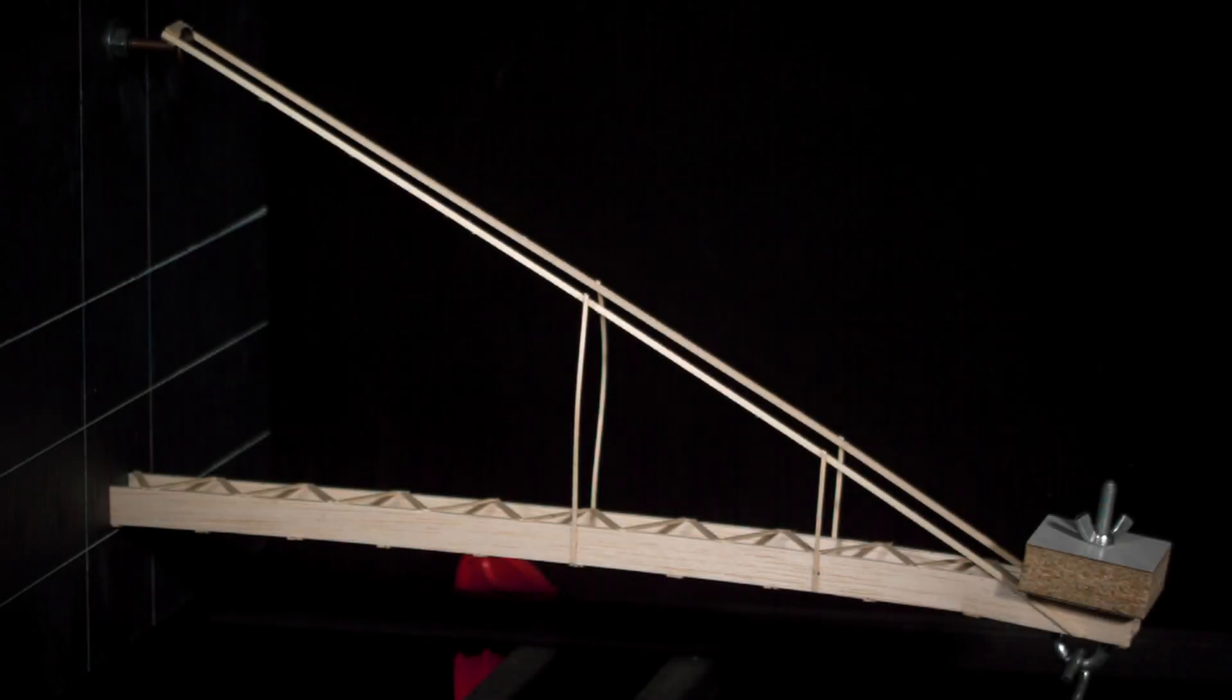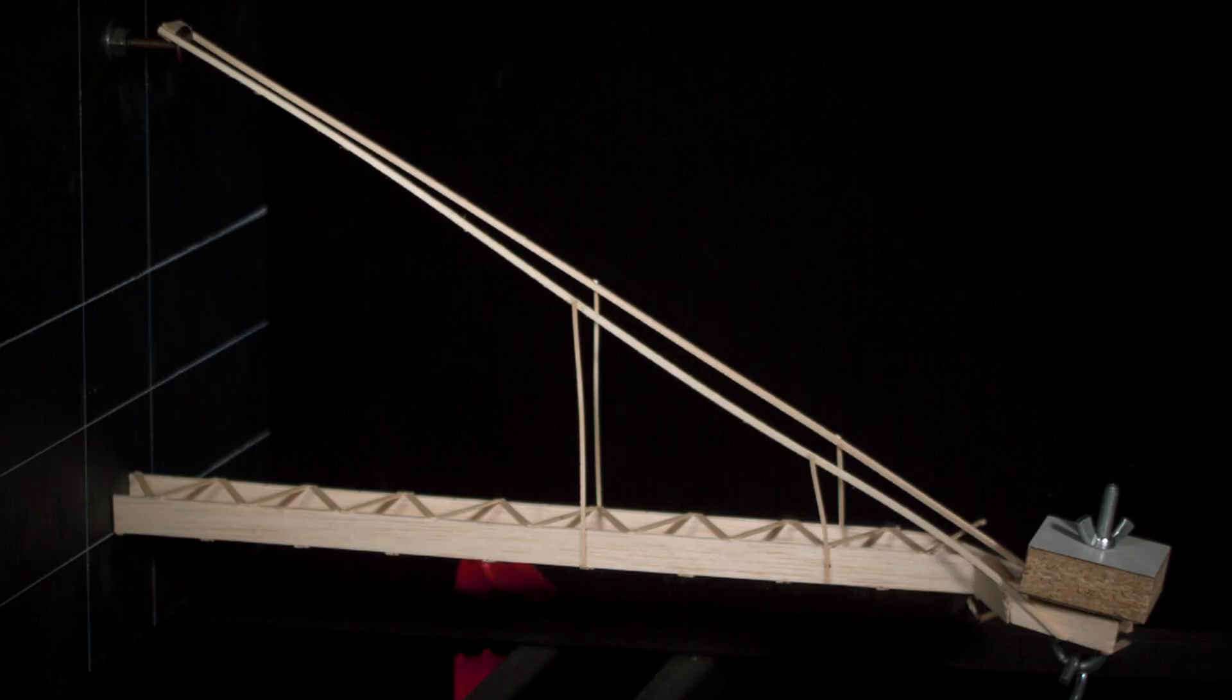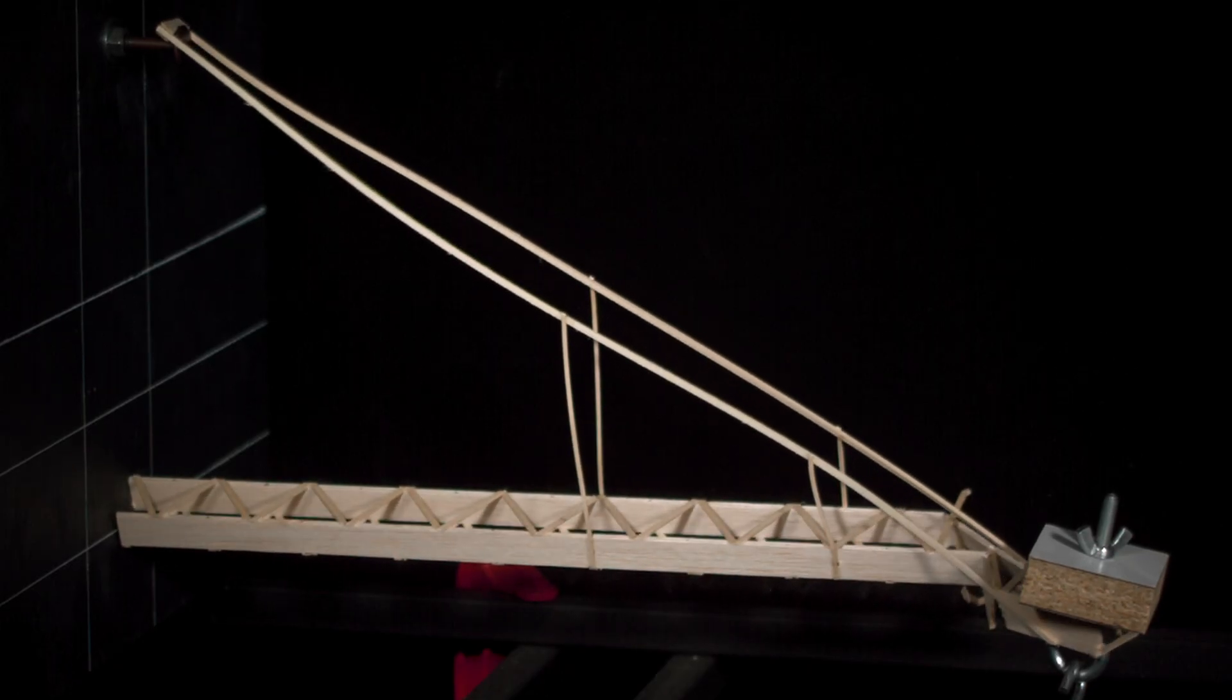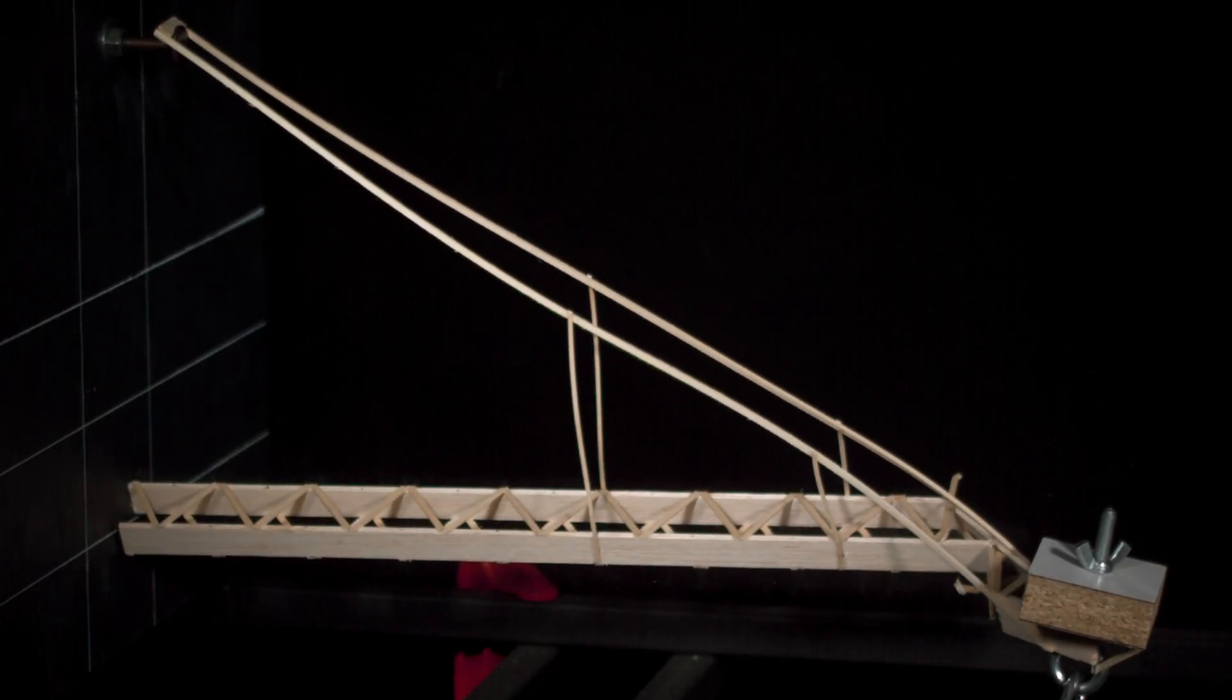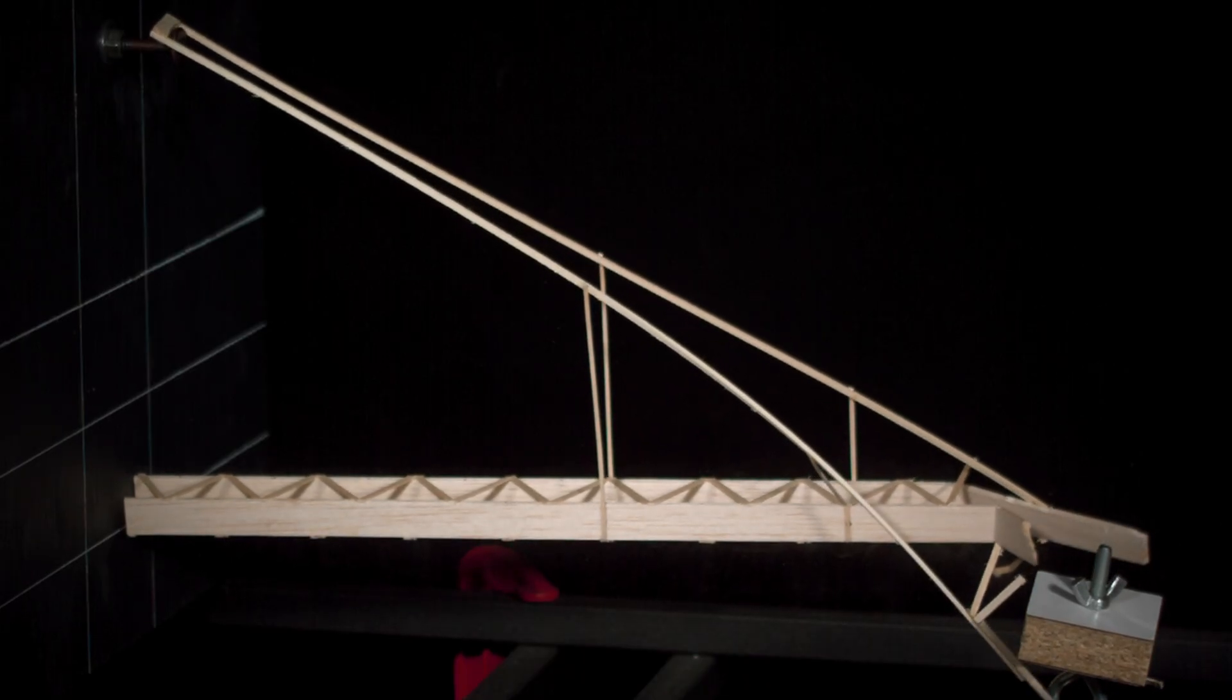What we are always looking for when examining the high speed footage is what was the very first thing that failed. That will tell us what the weakest part of the build was and can help guide future builds. If I freeze the video right at the first failure, you can clearly see that the front compression beam is buckling inward. That would indicate for the next build, if I leave the cross bracing design the same, I'll want to increase the beam mass a bit and reduce the mass of some of the other components to offset the gain.